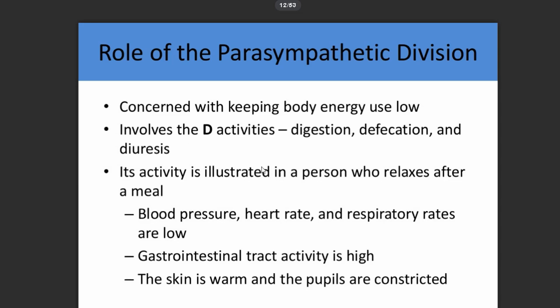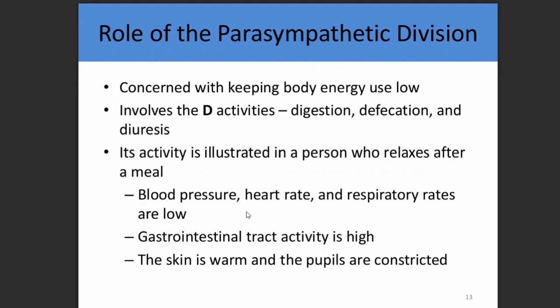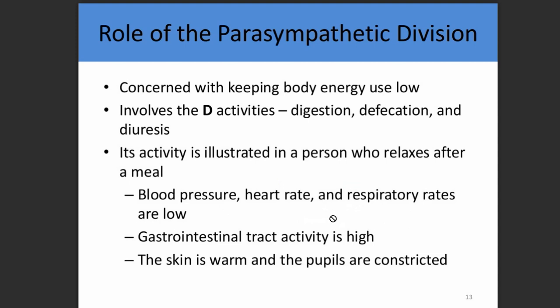The parasympathetic state is illustrated by a person relaxing after a meal — like after eating your favorite burger. Blood pressure is low, heart rate is low, respiratory rate is low, gastrointestinal activity is high to digest food, the skin is warm, and pupils are constricted.